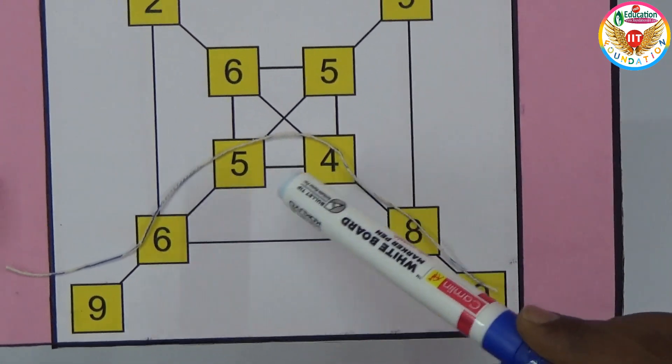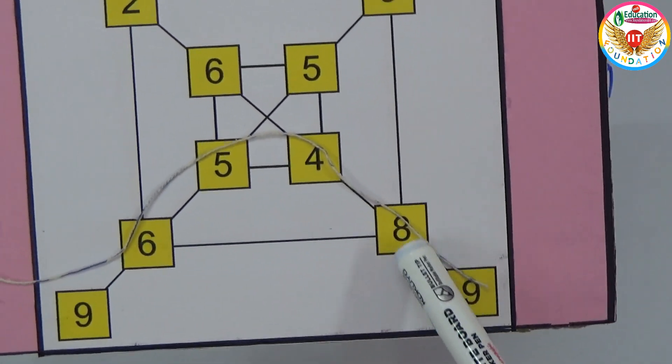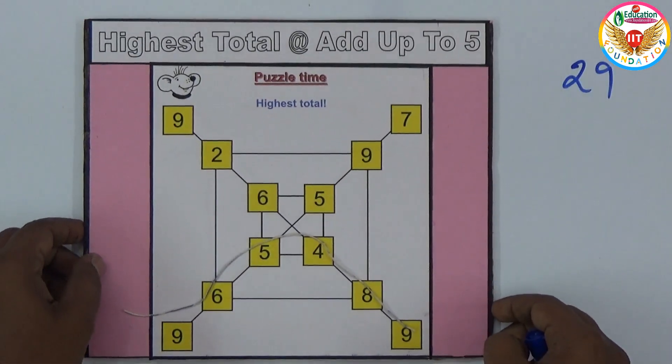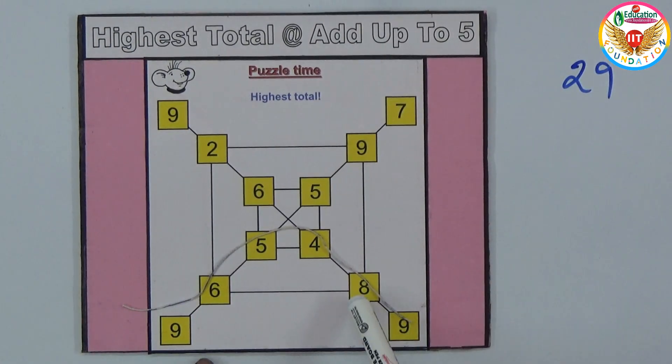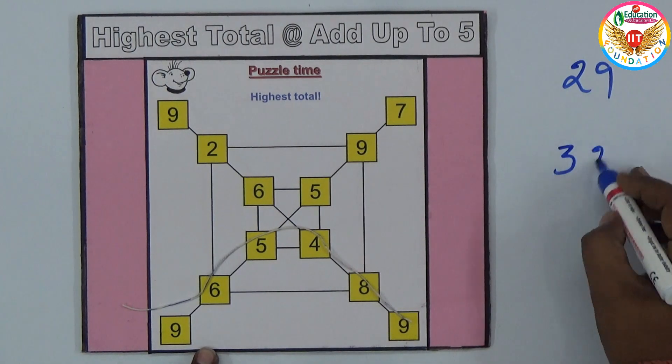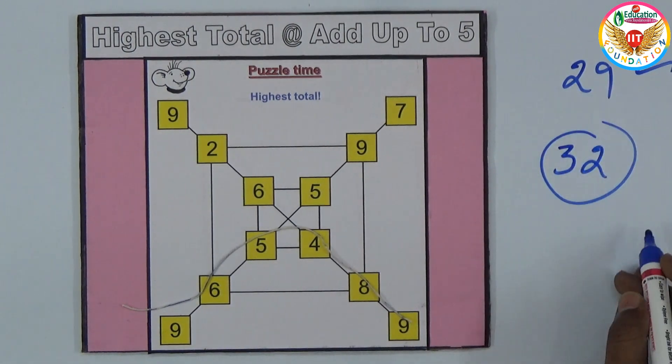If I take like this: 9 plus 8 is 17, 17 plus 4 is 21, 21 plus 5 is 26, and 26 plus 6 is 32. The sum increased a little bit compared to the previous.